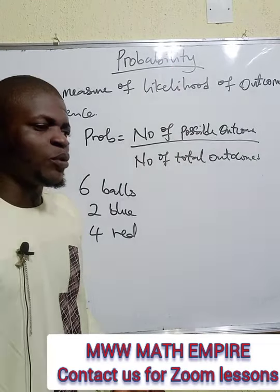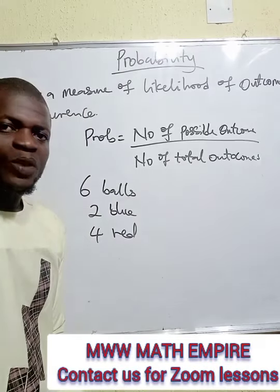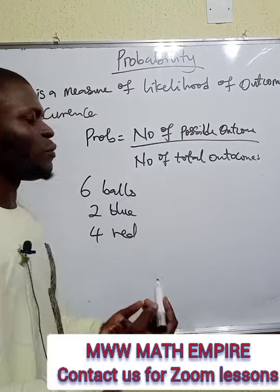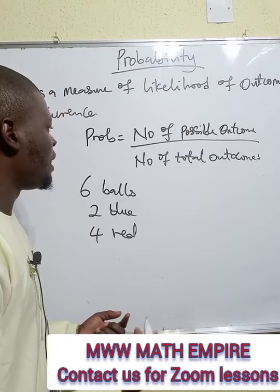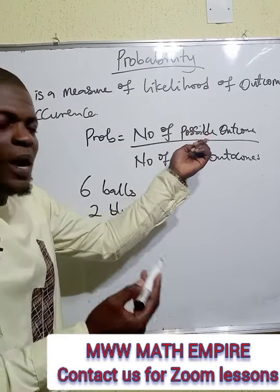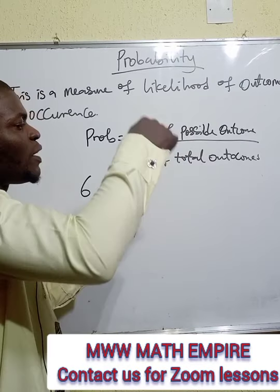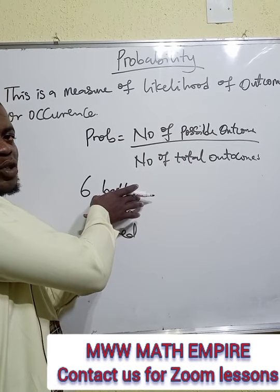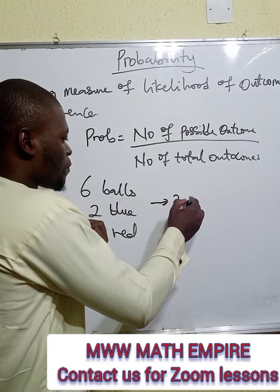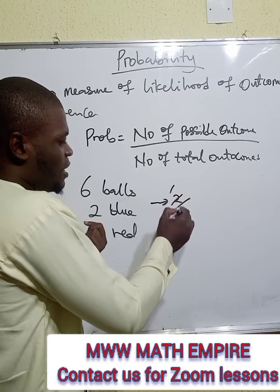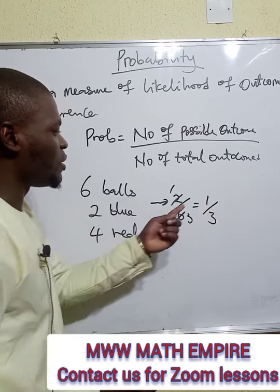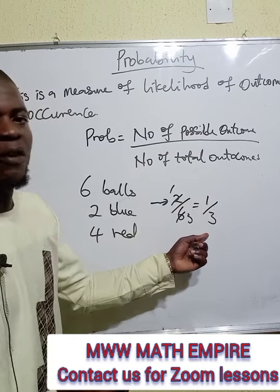It is possible for me to pick that ball, and it's also possible for me not to pick it. To find the probability of picking a blue ball, it's going to be the number of expected outcomes over total outcomes — which is two all over six. When I divide further, I will have one over three. So it's one out of three chances.